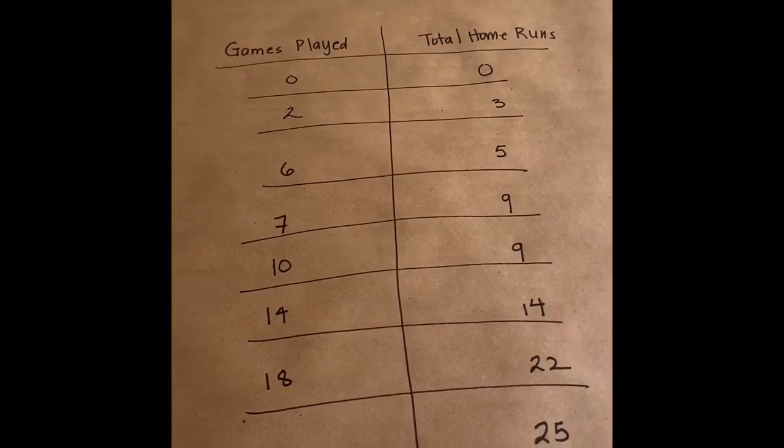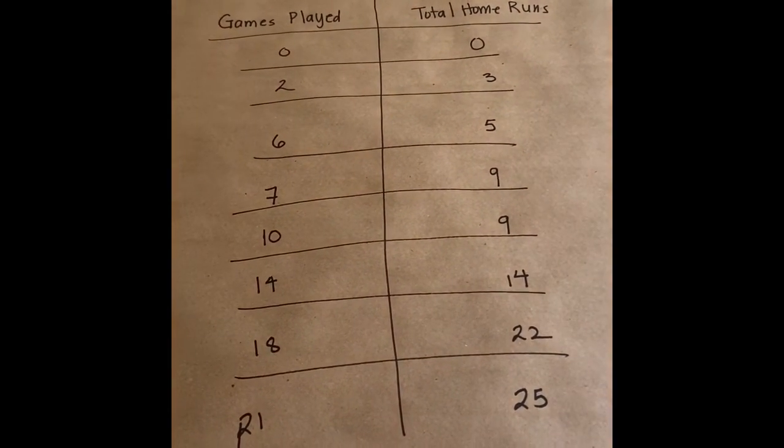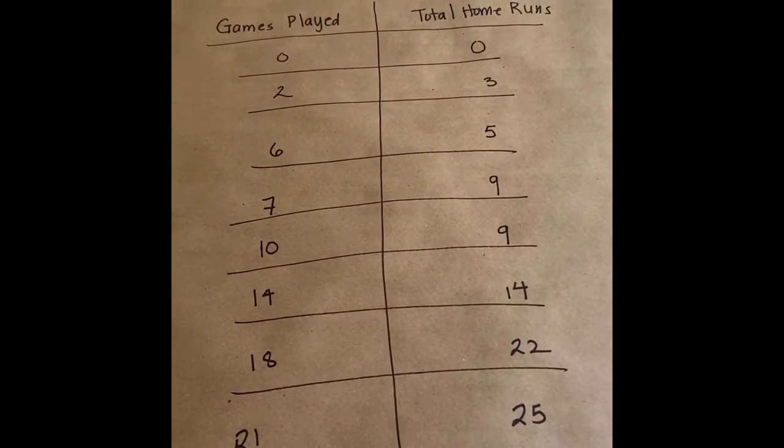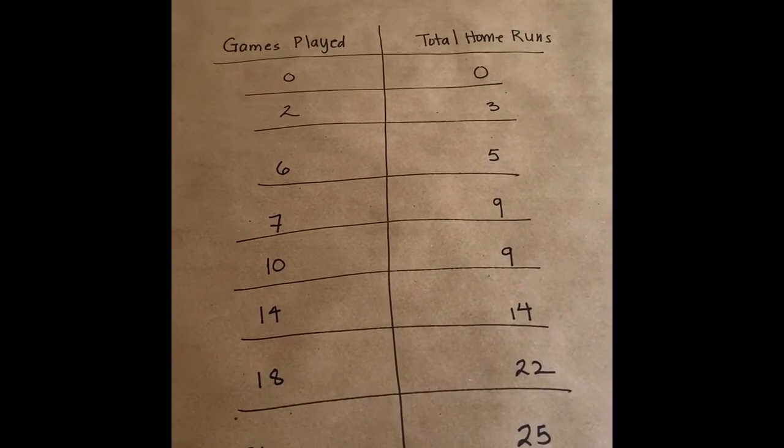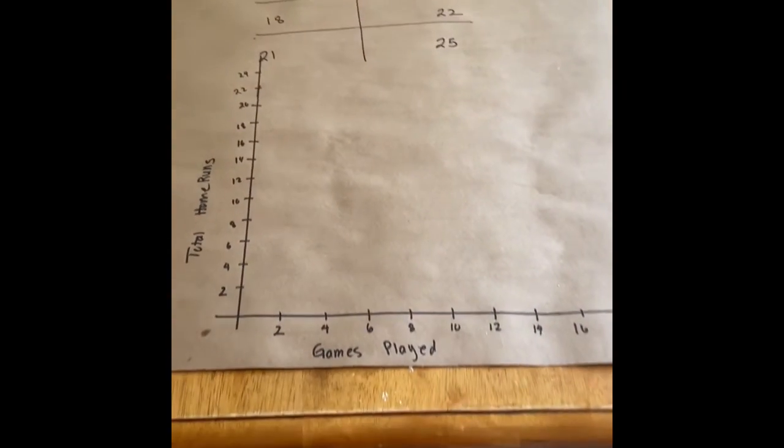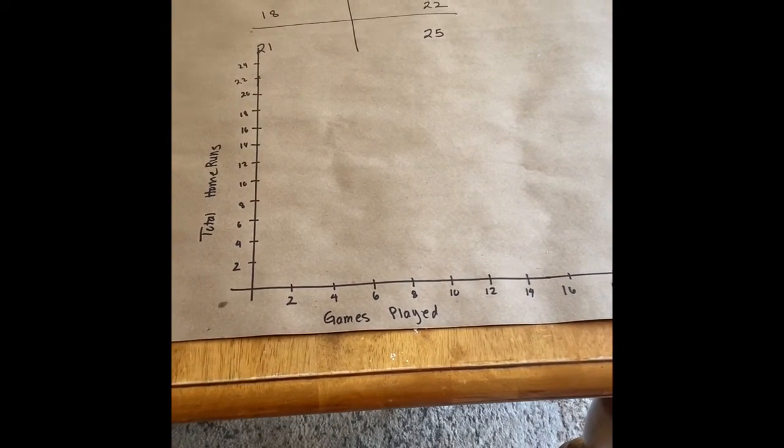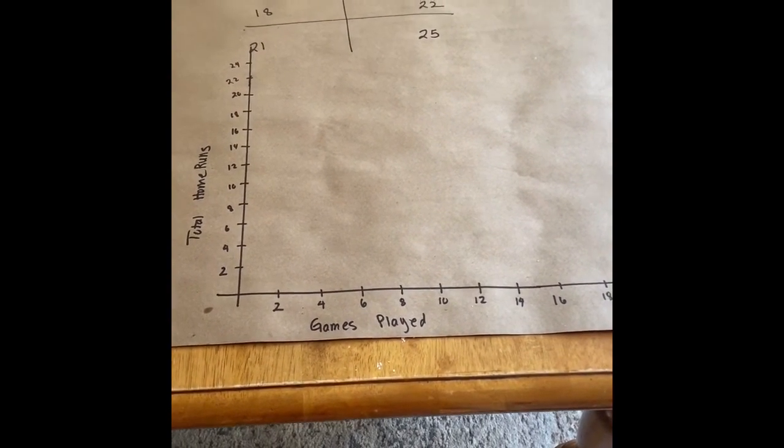Okay, so as you can see, I've made my table of values vertical. It's the same as from the worksheet on Google Classroom, except instead of going across, it's going down. And then I've also just drawn a set of axes and made a graph on my paper.